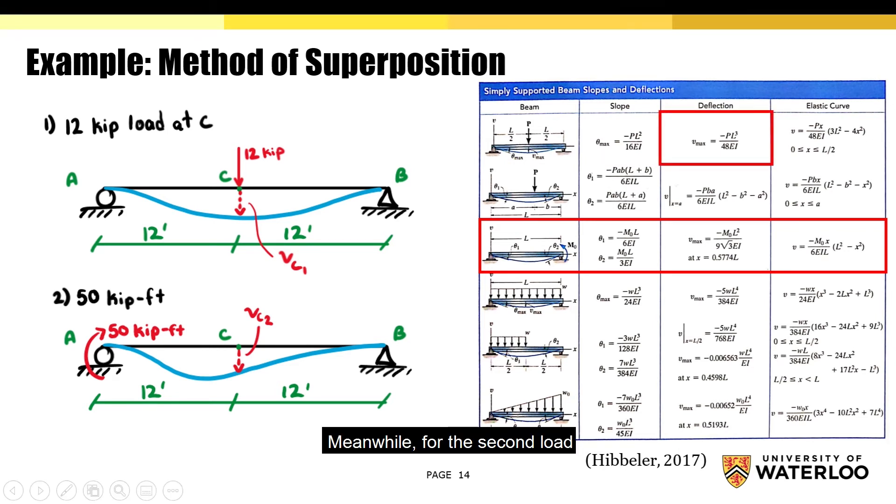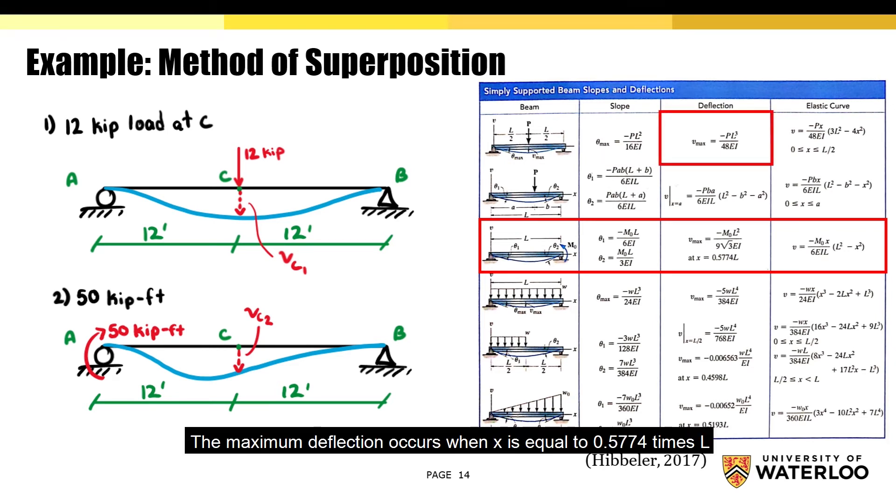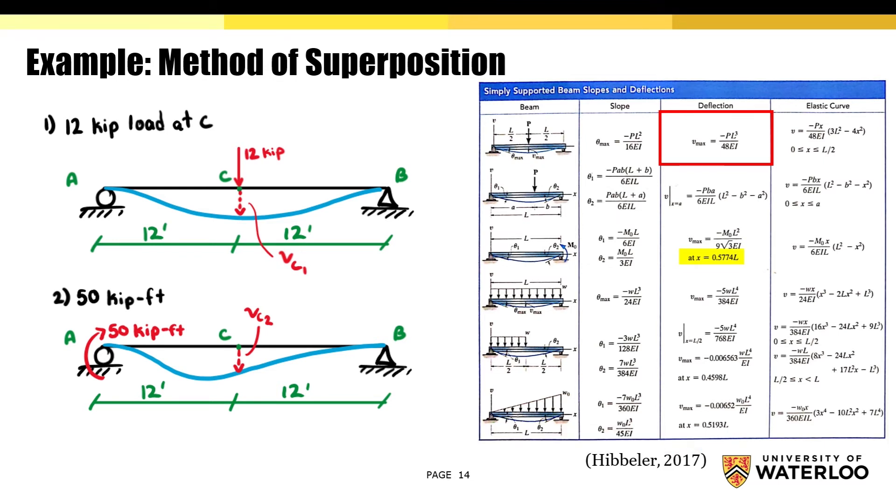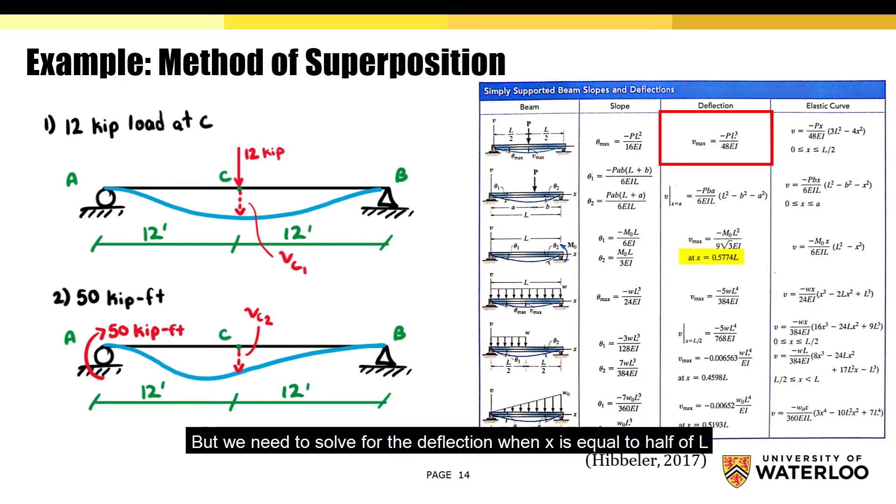Meanwhile, for the second load, the maximum deflection occurs when x is equal to 0.5774 times L, where L represents the total length of the beam. But we need to solve for the deflection when x is equal to half of L, and so we'll have to use this formula instead. On the following slide, I'll begin solving for the deflection for each component.